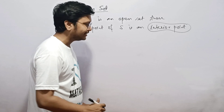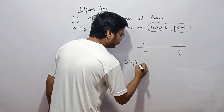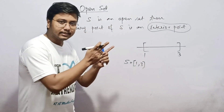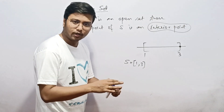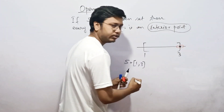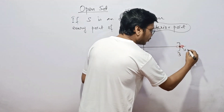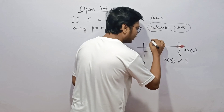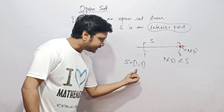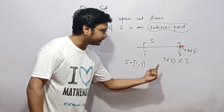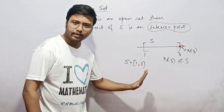If all the points of a set are interior points, that kind of set is called an open set. Let's take a quick example. Suppose I take the closed interval [1, 3]. Is 3 an interior point of this set? No, it's not. Because if you take a small neighborhood around 3, some portion of that neighborhood goes completely outside the set S, so N(3) is not a subset of S.